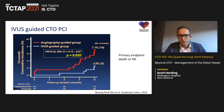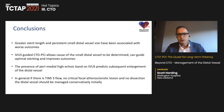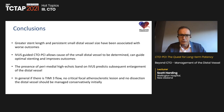There is plenty of data showing IVUS improves outcomes, including a randomized controlled trial in CTOs using IVUS guidance showing improved outcomes. Larger studies — IVUS XPL, ULTIMATE, ADAPT-DES — all confirm IVUS substantially improves outcomes. In conclusion: greater stent length and persistent small distal vessel size are associated with adverse outcomes. IVUS guidance determines the cause of a small distal vessel, guides the decision to intervene or observe, and optimizes stenting. If there is TIMI flow, no critical focal lesion, no hematoma or dissection, the distal vessel should be managed conservatively.